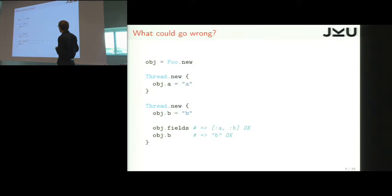Then we look at the fields. Here we have A and B, but we could also have just B. That would be also correct if this one didn't have time to execute. And then on read B, we get the value of B. That's right.